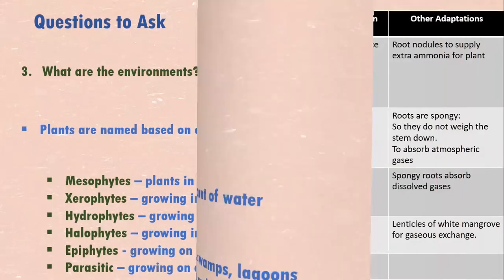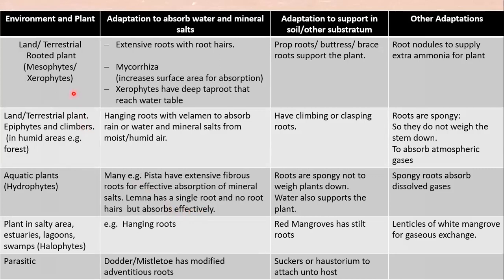Let us look at this table. We have the environment and the plant, adaptation to absorb water and mineral salts — that is the primary function — and another primary function, adaptation for support, to support the plant in its soil or substratum. All roots will have to meet these basic functions, and then there are other adaptations to perform additional functions.